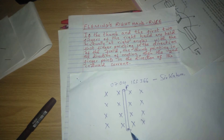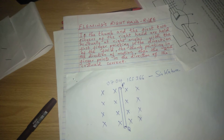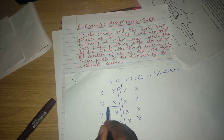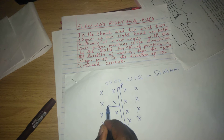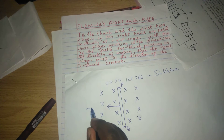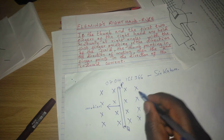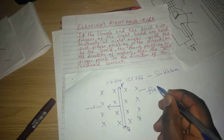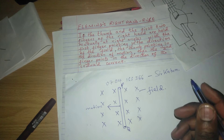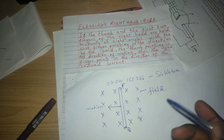We have conductor PQ, and we are told that the conductor is moved in a certain direction — this is the motion of the conductor. The magnetic field is going into the paper, as indicated by the cross symbols. We want to determine the direction of the induced EMF.